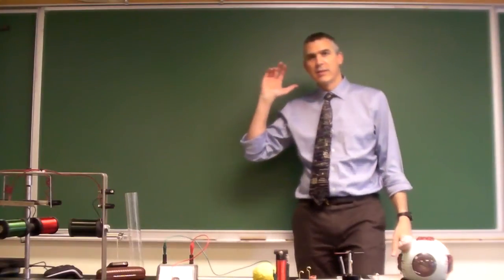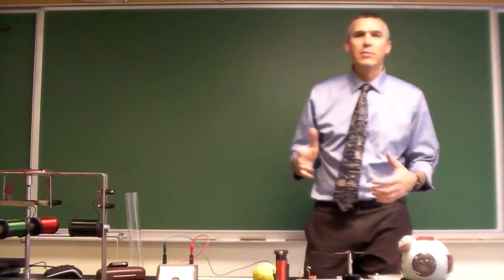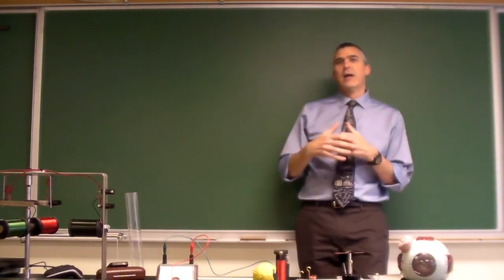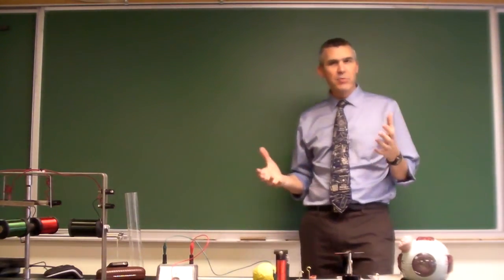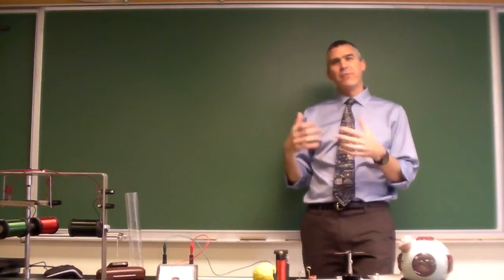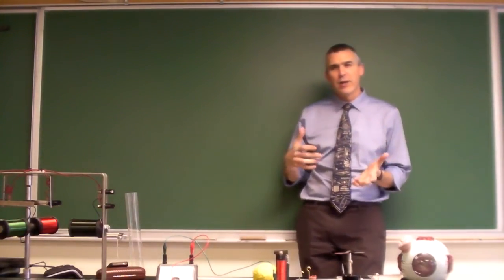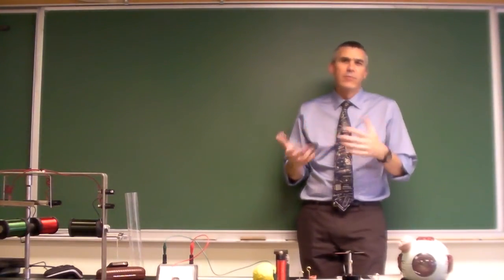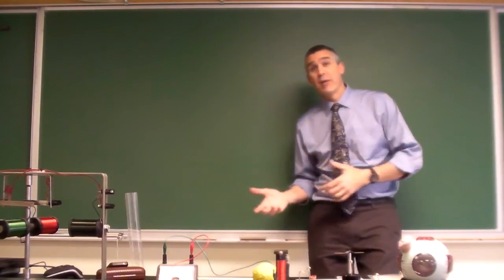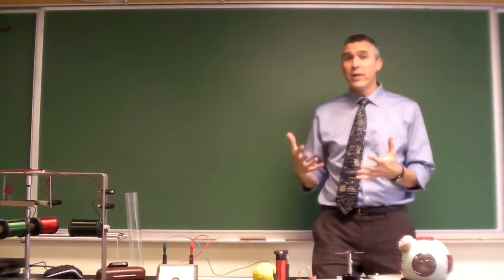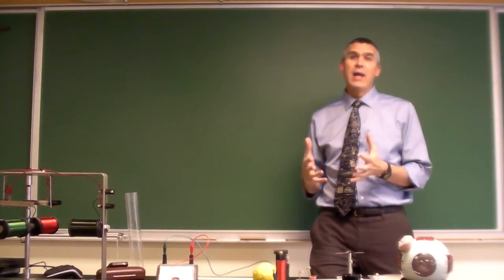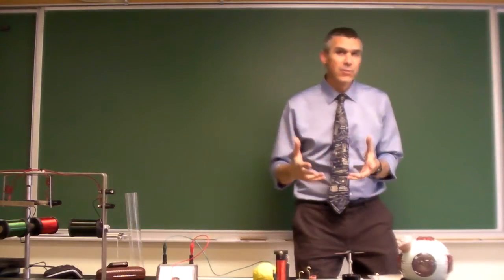Hey everybody. Today we're going to talk a little bit about the right-hand rules. These are guidelines to help you figure out what direction the magnetic field is going around a conducting wire, or conversely, what direction the current is based on a magnetic field. And there are three right-hand rules that you need to remember, and we're going to go through them quickly.